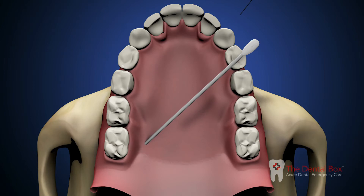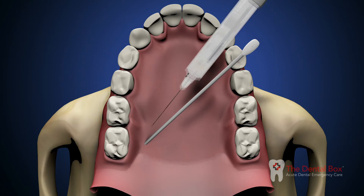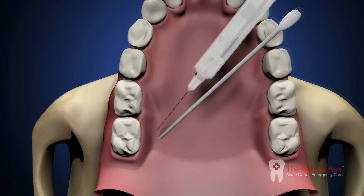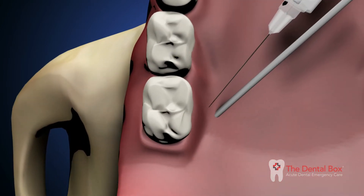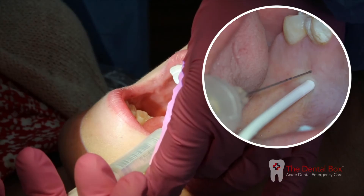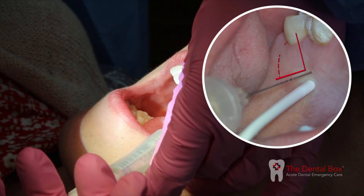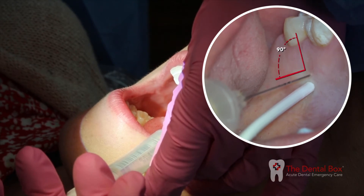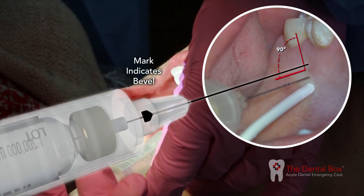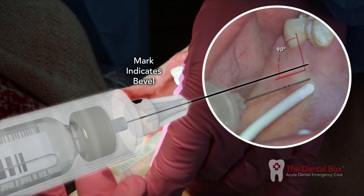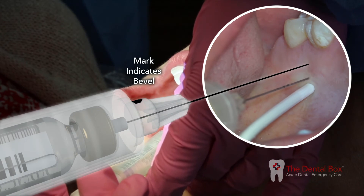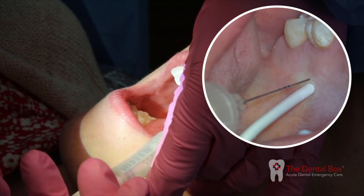Direct the syringe into the mouth from the opposite side with the needle approaching the injection site at a right angle. Then place the bevel of the needle against the previously blanched soft tissue at the injection site.